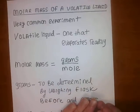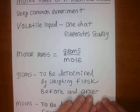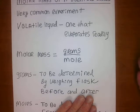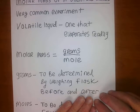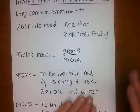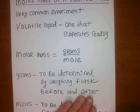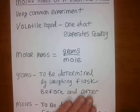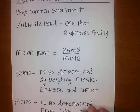So how are you going to determine this? The grams we're going to determine by a simple weighing. We're going to weigh a flask dry, put some liquid in there, heat it, vaporize the liquid, dry off excess vapor, cool it down, re-weigh it, subtract the difference between the two masses, and that will give you the mass. How are we going to get the moles? The moles are going to be determined by an application of the ideal gas law.